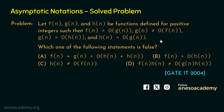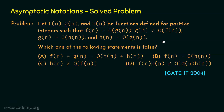Let us assume f(n) = n and g(n) = n². If we assume f(n) = n and g(n) = n², then both conditions will be satisfied, because n and n² are not asymptotically equal and n² is asymptotically bigger than n. Both conditions are satisfied.